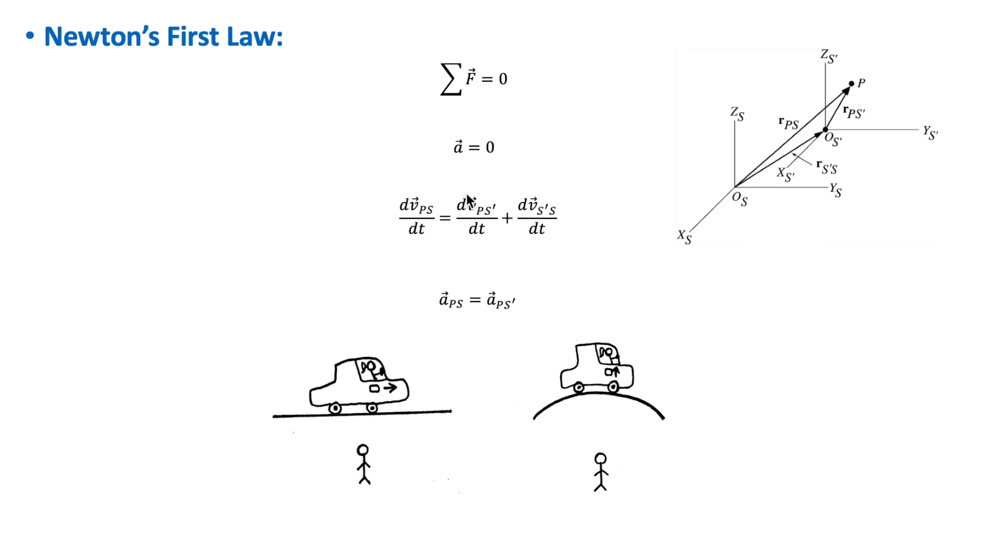If we take the equation and differentiate it with respect to time, we get this equation. This is because V_S'S, which is the velocity of S' relative to S, is constant in both magnitude and direction, and so the derivative is zero, and so we get this relation. The acceleration of a particle P measured from both the inertial frames S and S' is the same.